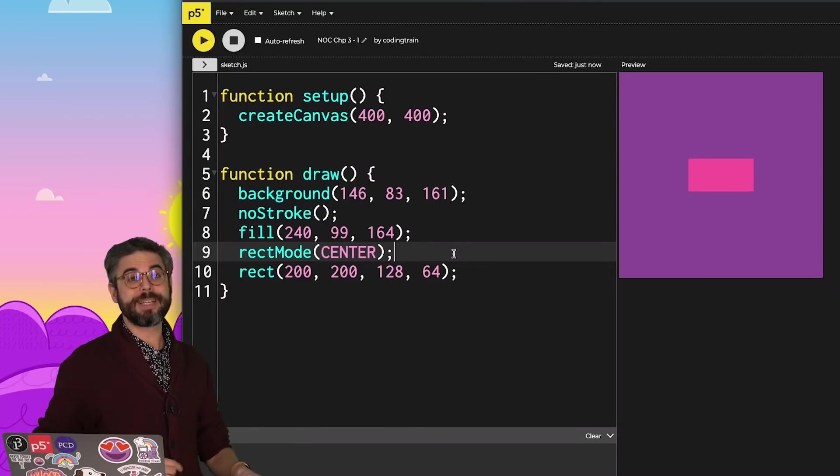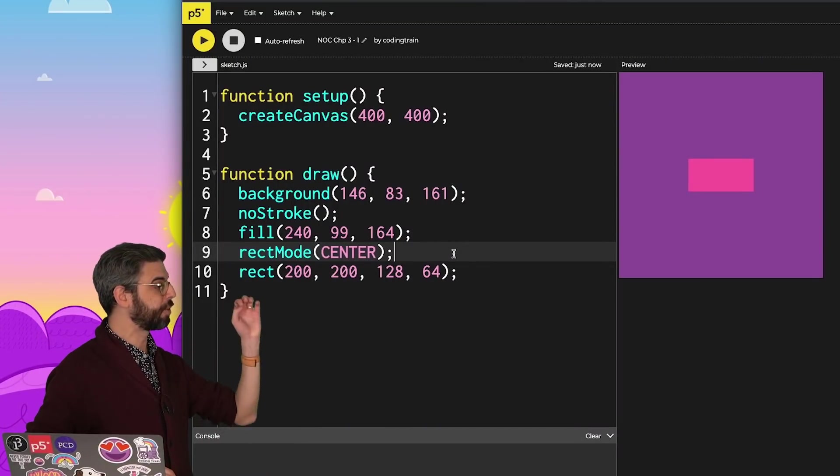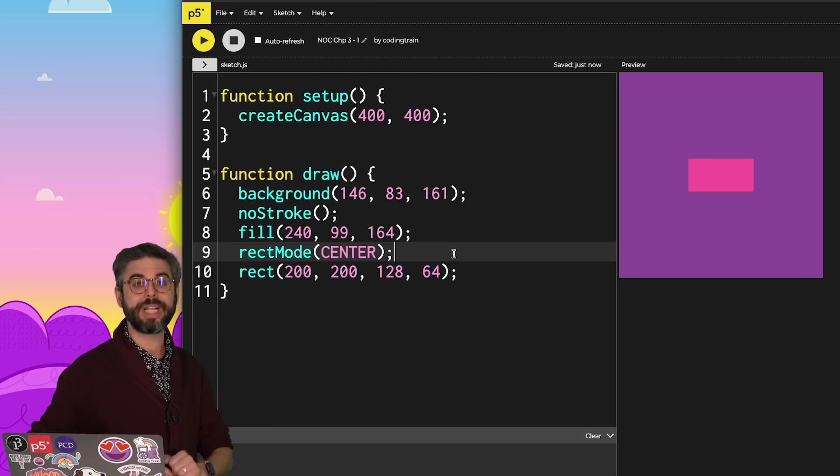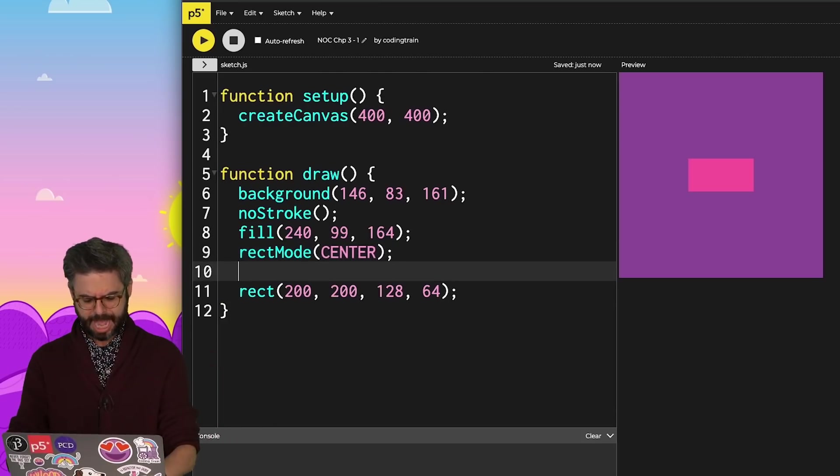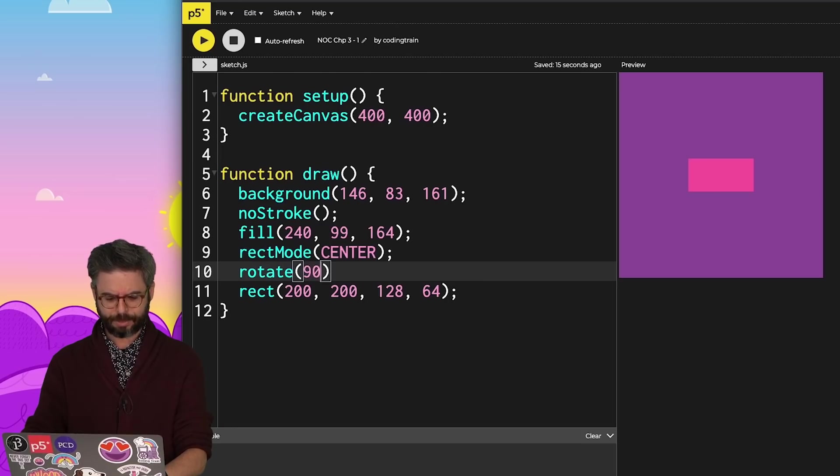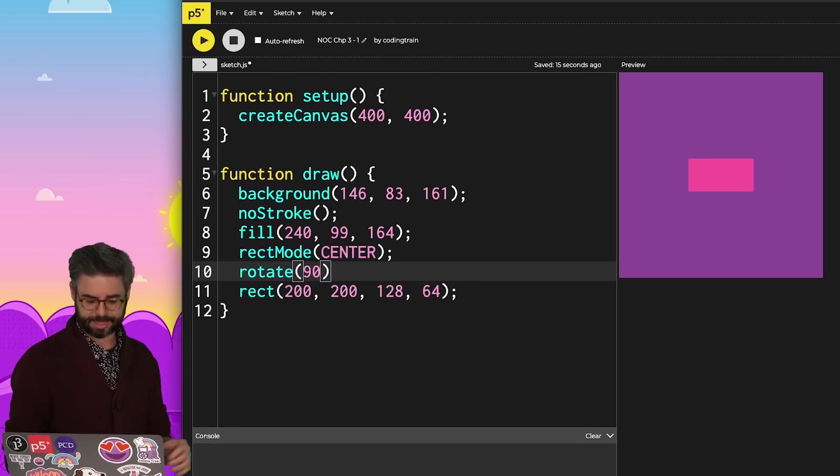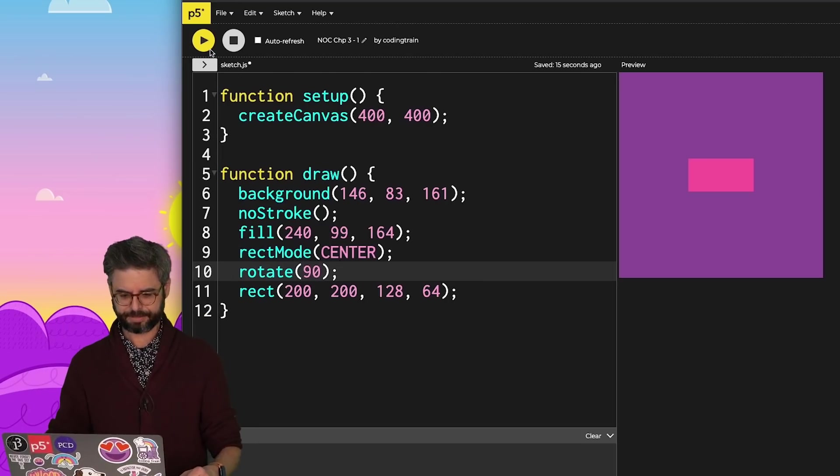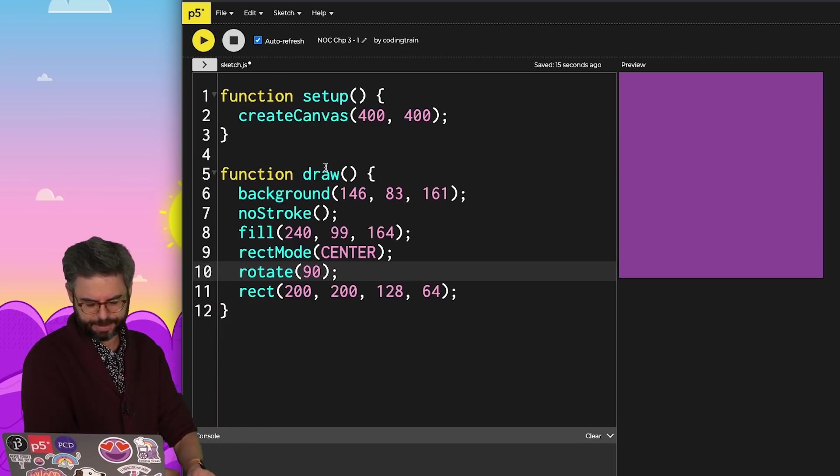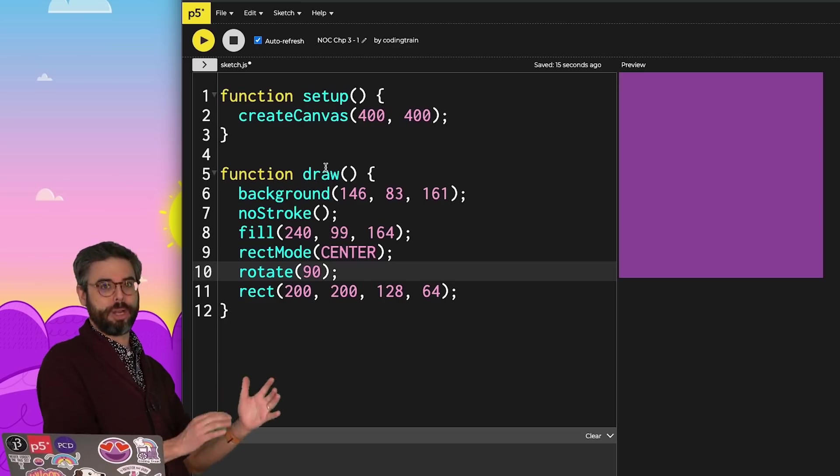So here I have a very simple P5.js sketch that is doing just one thing, drawing a rectangle in the center of the canvas. So presumably, I could do something like say, hey, rotate that rectangle by 90 degrees and rerun the sketch. And I'm going to put auto refresh on so that it constantly updates. So first of all, it's completely gone. What happened here?